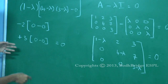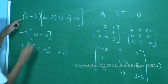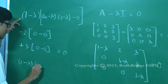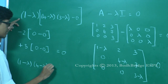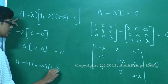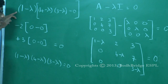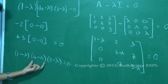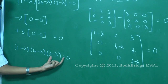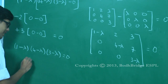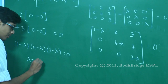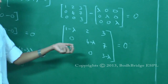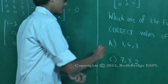Since det(A minus lambda I) equals zero, we finally get: (one minus lambda)(four minus lambda)(three minus lambda) equals zero. Therefore either one minus lambda equals zero, or four minus lambda equals zero, or three minus lambda equals zero. The eigenvalues are lambda equals one, four, three — so the answer is option A.